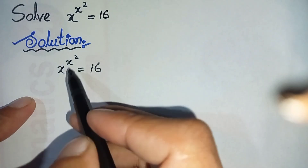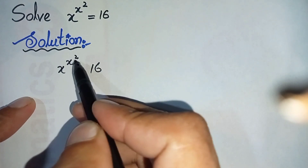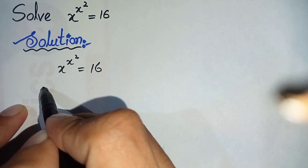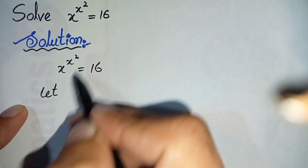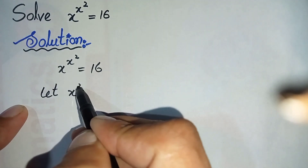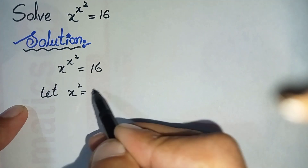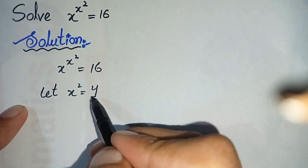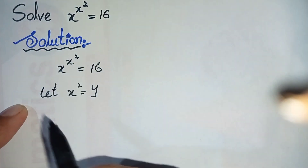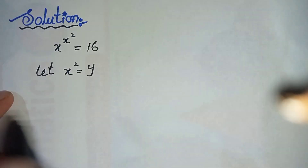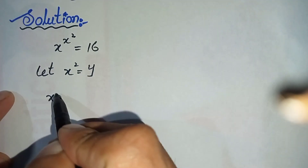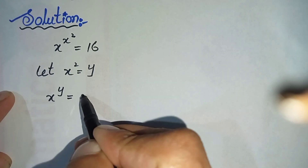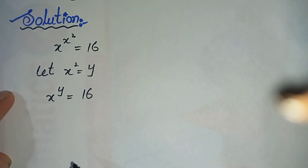First of all, we will suppose that x² is equal to y. Now we will replace x² with y in this equation, so it will become x raised to the power y is equal to 16.